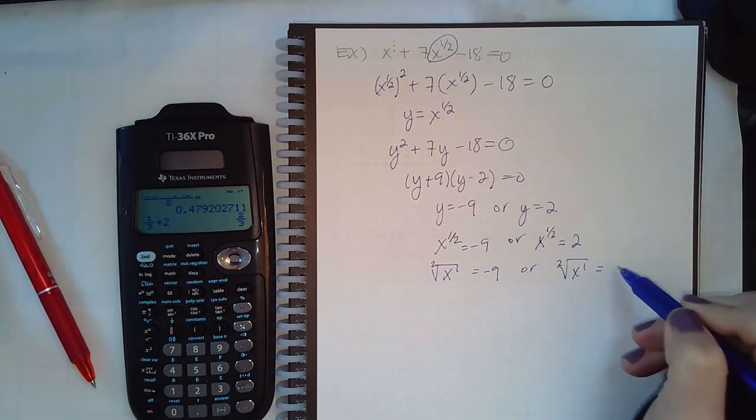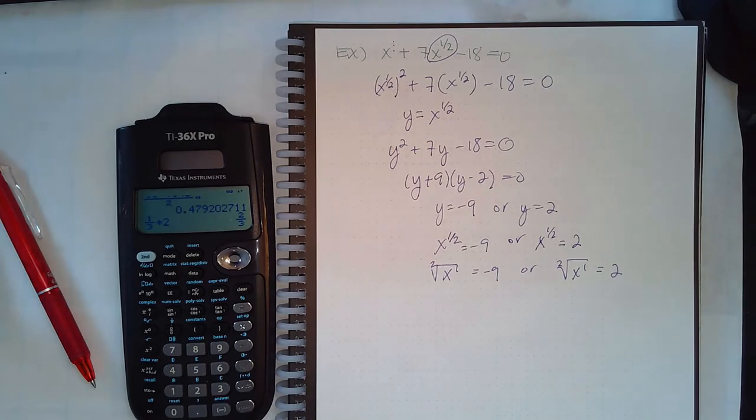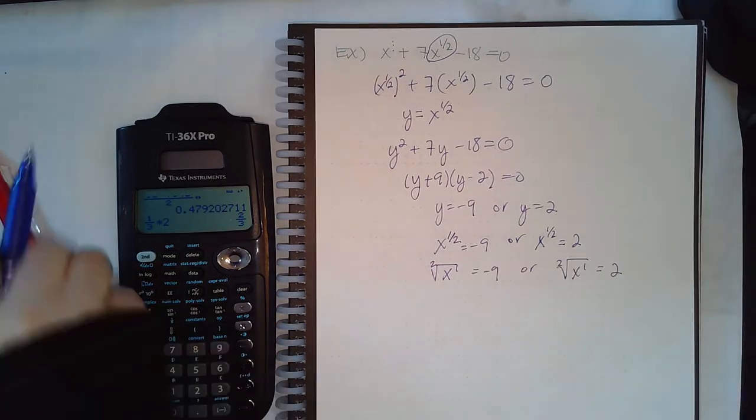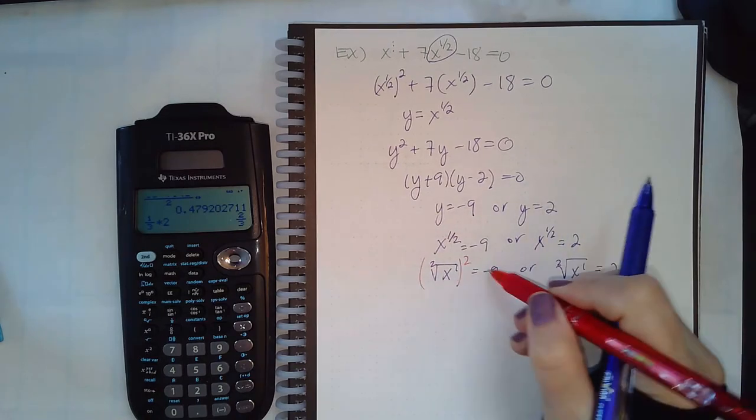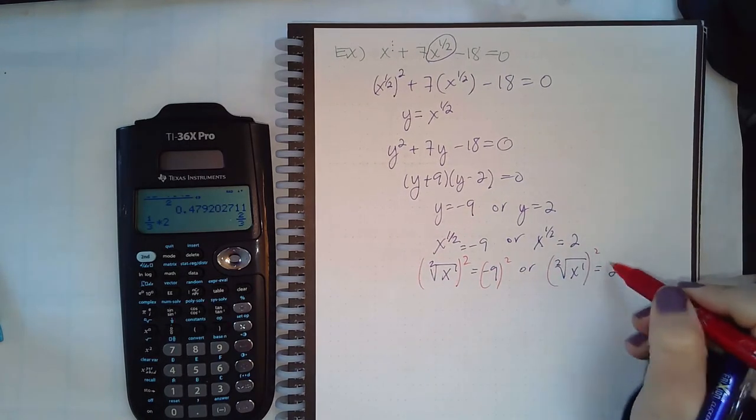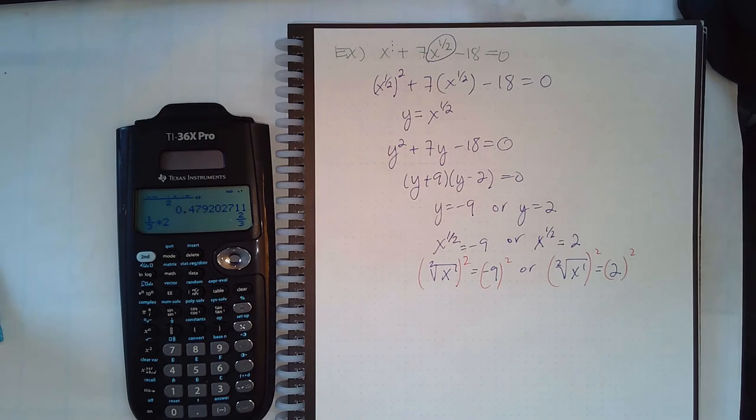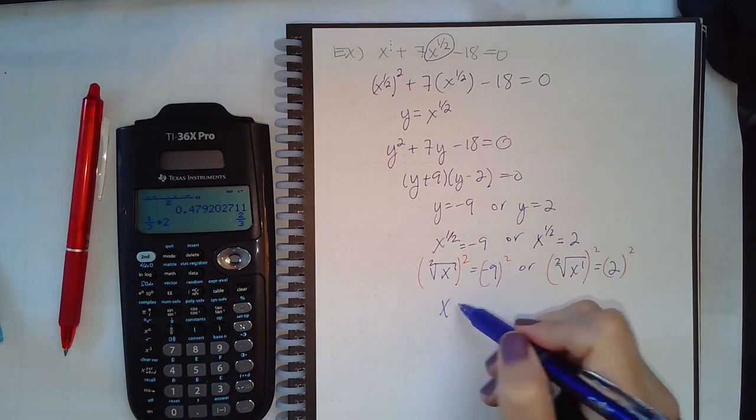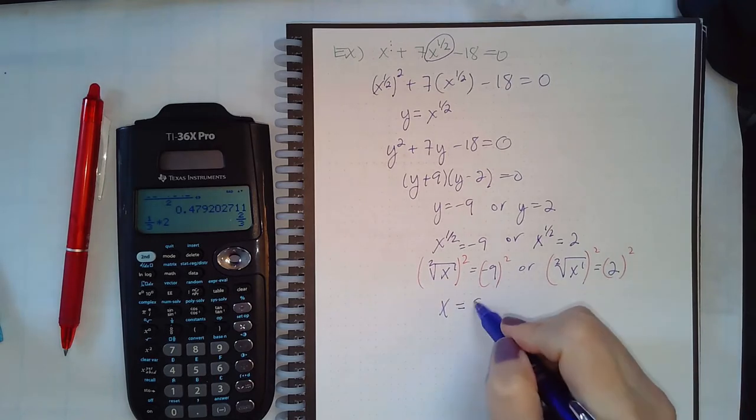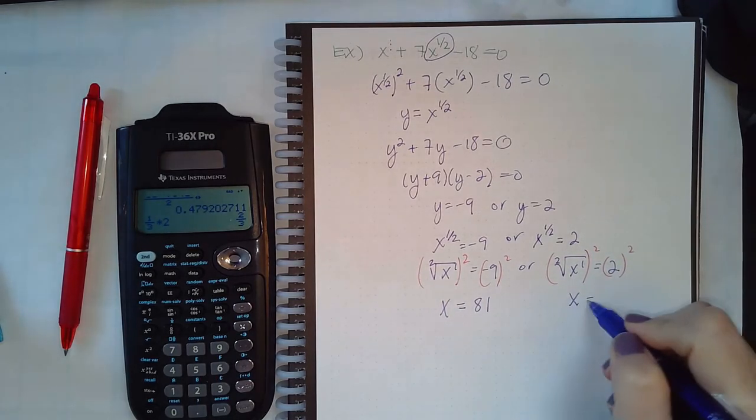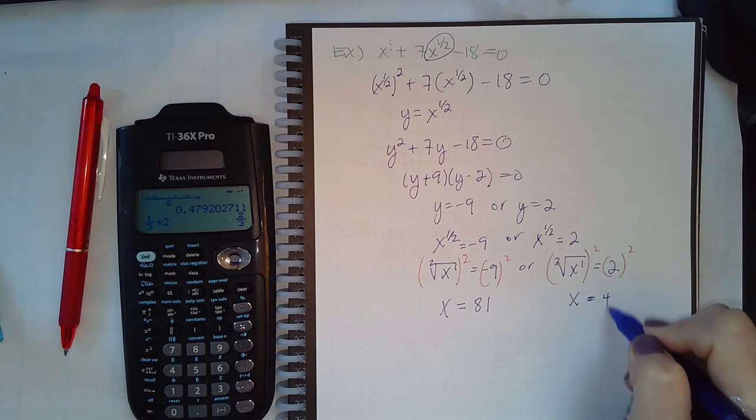So then this is a square root of x to the one power, and the square root of x equal to this. So we're going to power both sides by squaring them.